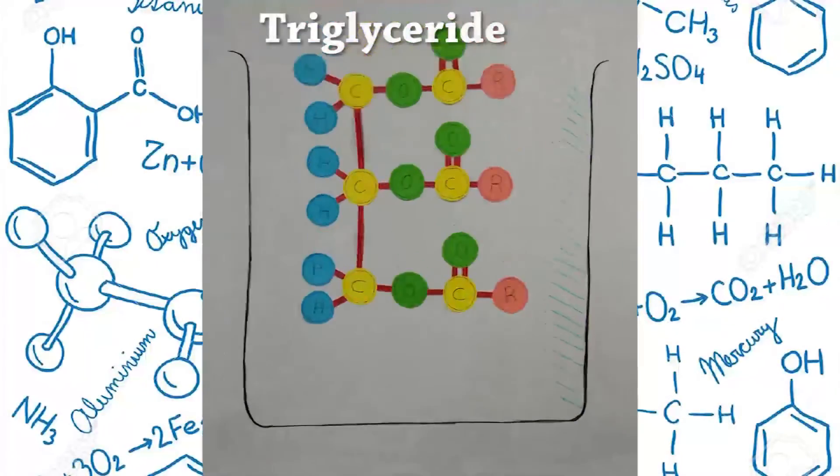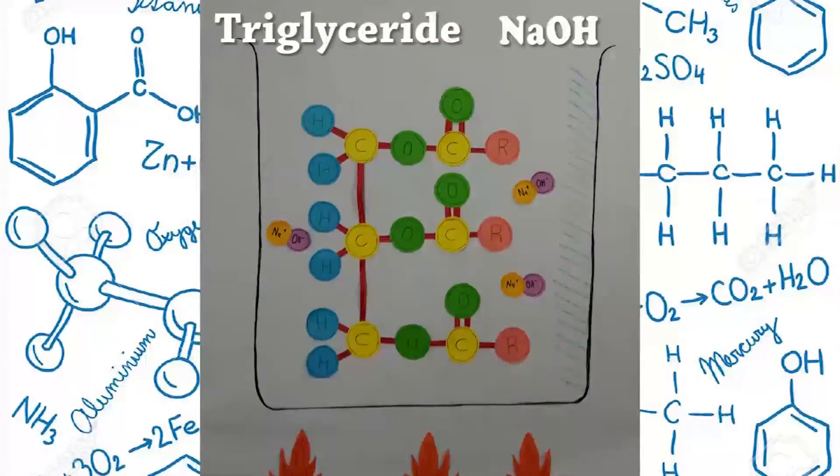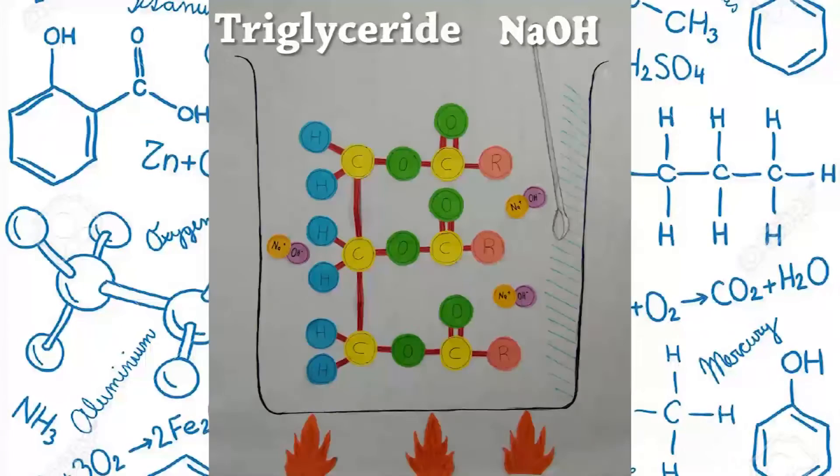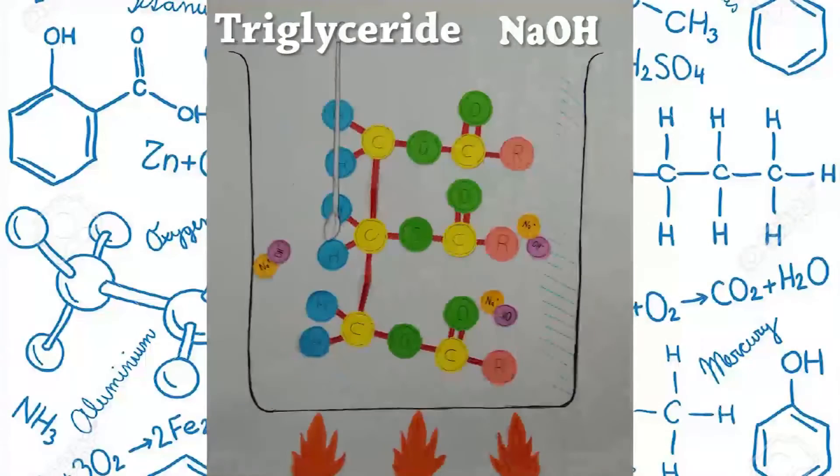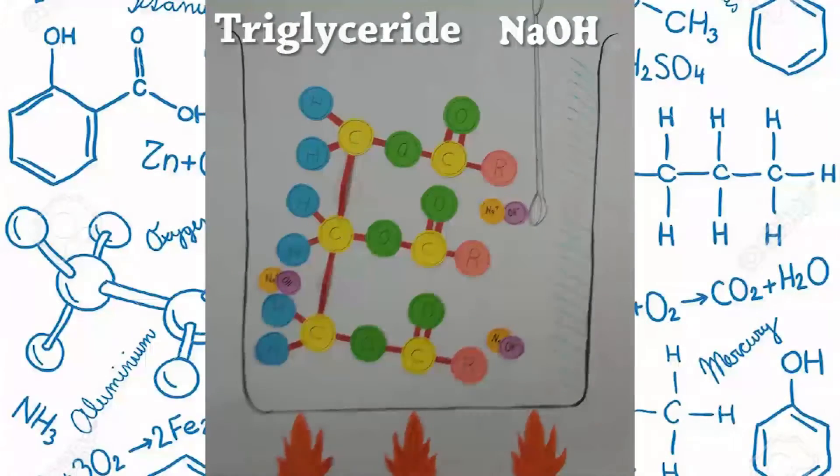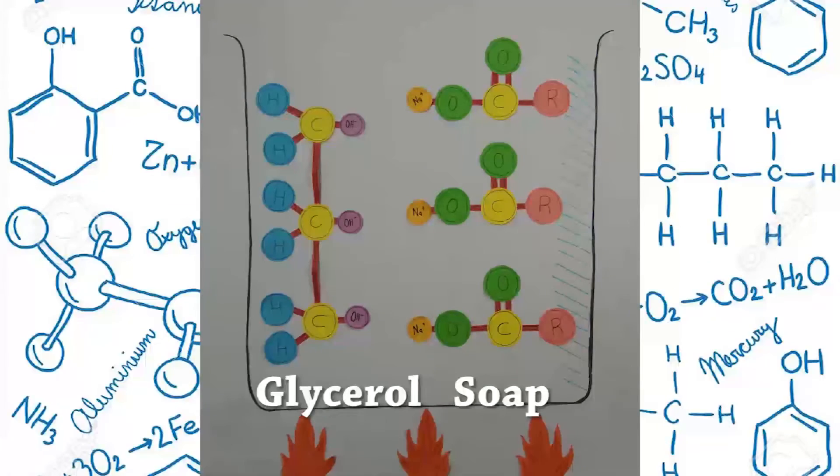As you can see, the ester group combined with the sodium ion from the sodium hydroxide to form soap, while the remaining in the triglycerides will combine with the hydroxide ion to form glycerols.